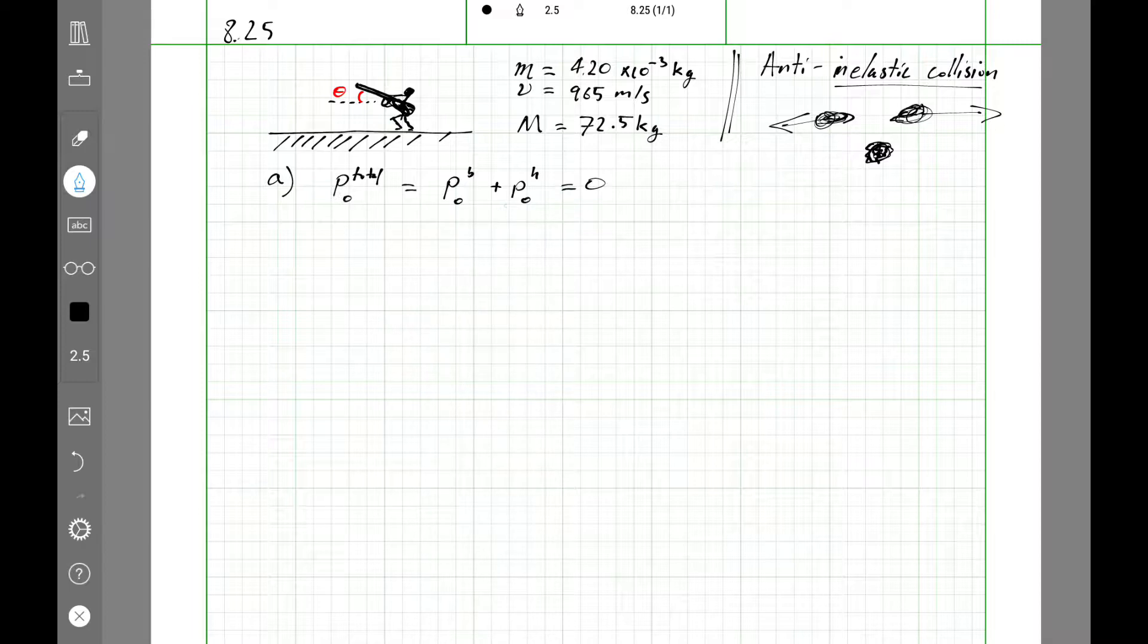So I'll put this zero stands for state zero, or before the event. Actually, maybe that's better. I'll put a B here to be before. Then this B on top is the bullet, and that's the hunter. Momentum is conserved.